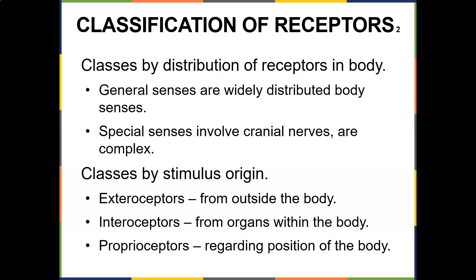Classes by distribution: general sensors are widely distributed body sensors, while special sensors involve the cranial nerves and are very complex. Exteroceptors come from outside the body, interoceptors come from organs within the body, and proprioceptors deal with the position of the body in space — for example, when doing musculoskeletal rehab for the ankle, we work on proprioception to prevent further injuries.